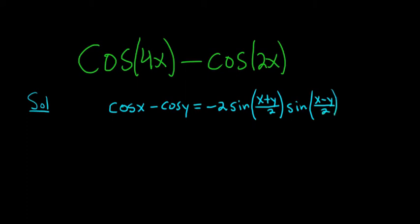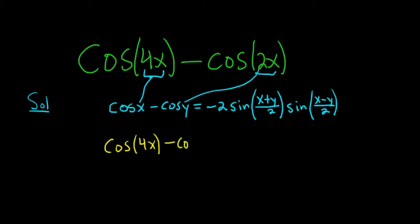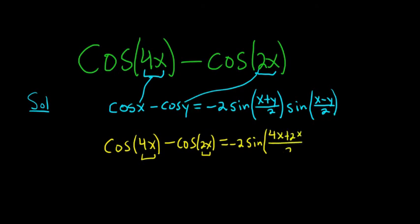So in this problem, all we have to do is replace this x here with 4x and this y with 2x. So we have cosine of 4x minus cosine of 2x. That's negative 2 sine, and it's x plus y over 2 — so it's 4x plus 2x, all over 2. Then we have sine, and it's x minus y over 2 — so it'll be 4x minus 2x, all over 2.